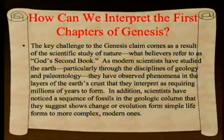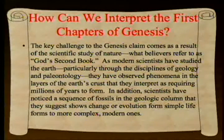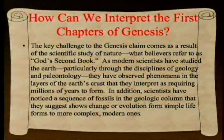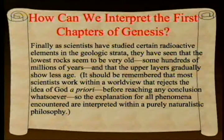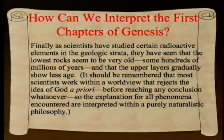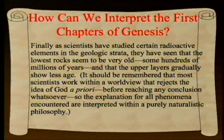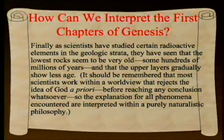In addition, scientists have noticed a sequence of fossils in the geologic column that they suggest show changes—evolution—from simple life forms to more complex modern ones. Scientists have also studied radioactive elements in the geologic strata and seen that the lowest rocks seem to be very old, some hundreds of millions of years. It should be remembered that most scientists work within a worldview that rejects the idea of God a priori, so all phenomena are interpreted within a purely naturalistic philosophy.